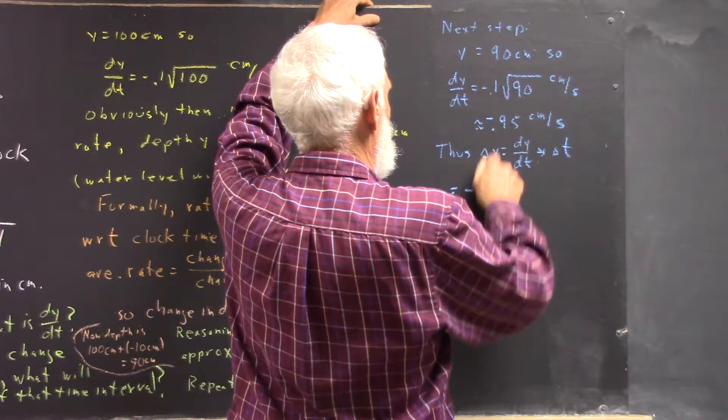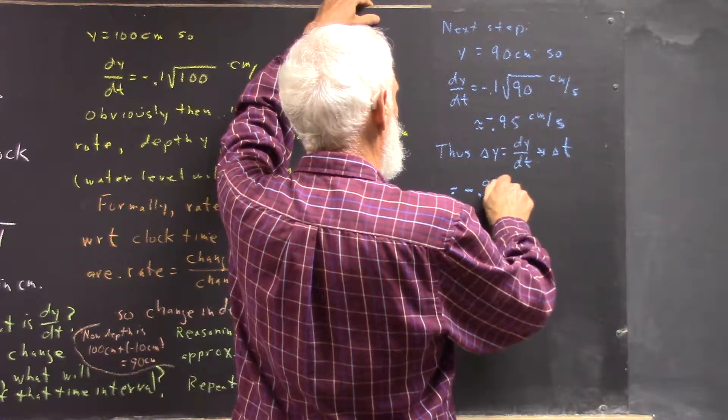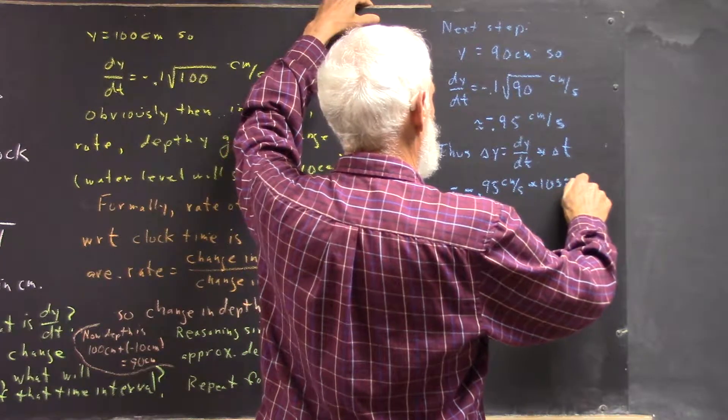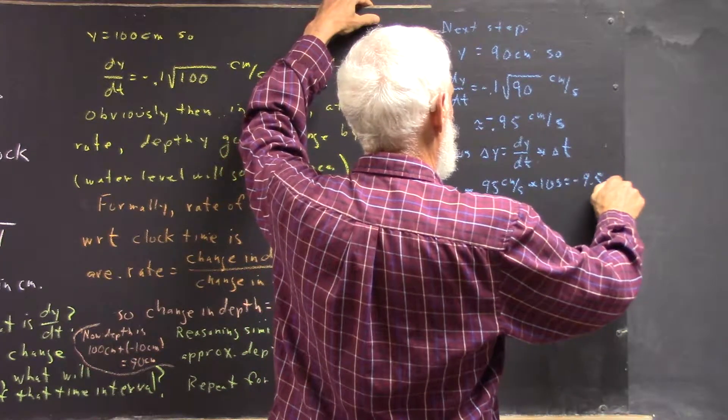And there's a negative on that, negative 0.95 centimeters per second, that's 10 seconds, equals negative 9.5 centimeters.